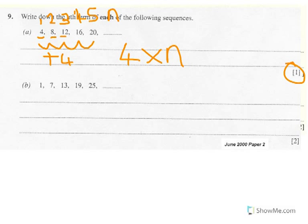And this one's only worth one mark as you can see. This is a particularly easy one because if you multiply each of the term numbers, 1 times 4 is 4, 2 times 4 is 8, 3 times 4 is 12, 4 times 4 is 16, 5 times 4 is 20.